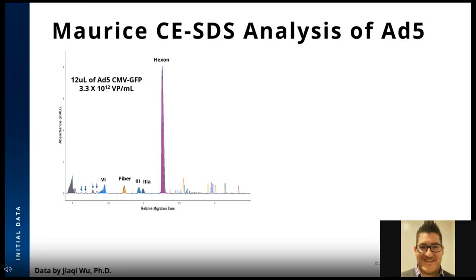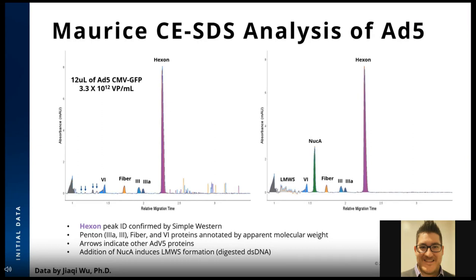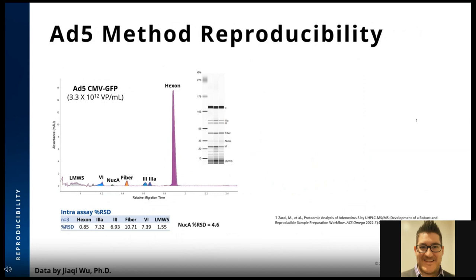Using the method described earlier, we analyzed adenovirus type 5 CMVGFP by Maurice CESDS. Shown are triplicate injections of a 10¹² VP/mL sample. Several peaks are annotated — the hexon protein was confirmed by an orthogonal technique, others by molecular weight inference. Above the hexon protein there were many irreproducible spikes. After nuclease A digestion, we confirmed that these peaks correspond to the AdV5 genome, and observed the generation of several low molecular weight species upon genome digestion.